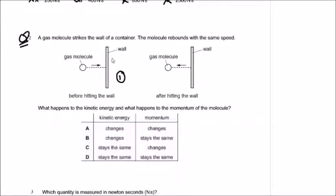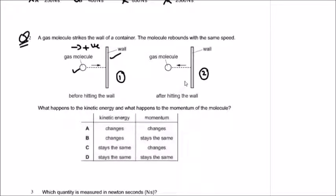In picture one, the gas molecule is moving towards the wall — take this direction of speed as positive. This is the case before hitting the wall. In picture two, the gas molecule bounces back after hitting the wall, so the direction of velocity is totally opposite — we can note that as negative.